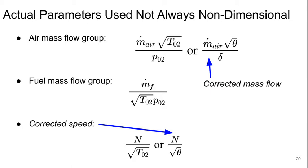In industry, the actual parameters used are not always truly non-dimensional. This is typically done because comparisons are most often made for the same engine operating at different conditions rather than different engines. The big thing that tends to be dropped is anything that has to do with geometry, such as the engine size. So the air mass flow group would become m_air times the square root of theta over delta, where these are non-dimensional stagnation temperature and stagnation pressure ratios.